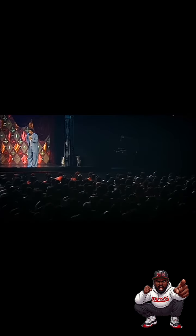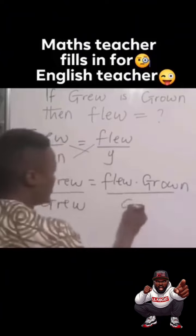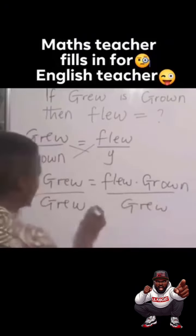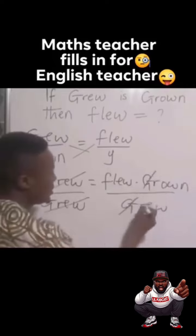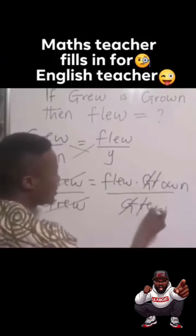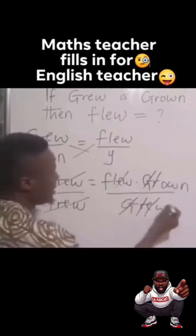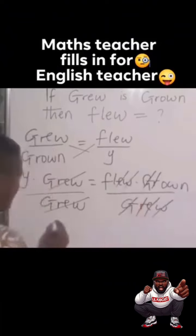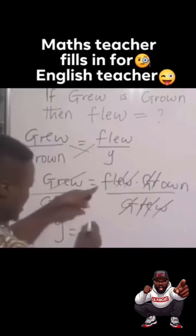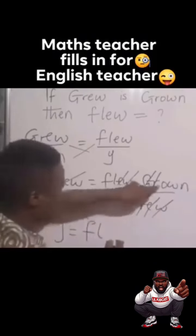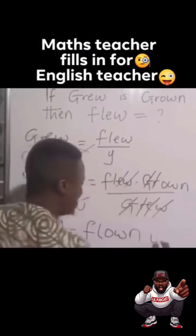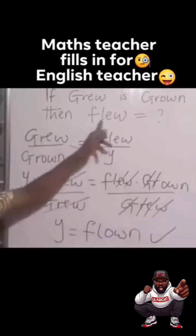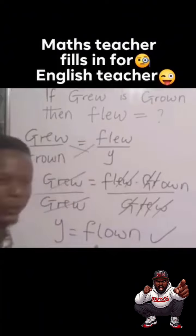Divide both sides by 'grew,' so that 'grew' cancels. We can see 'grew' here: G we cancel, R we cancel, E we cancel, W we cancel. So y is F-L-O-W-N. Therefore, the past participle of 'flew' is 'flown.' What makes you think I care?